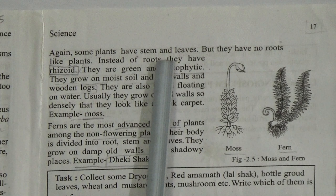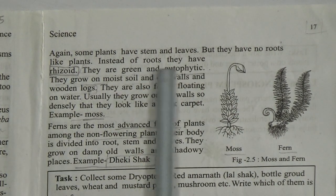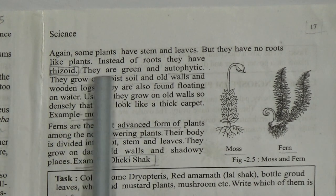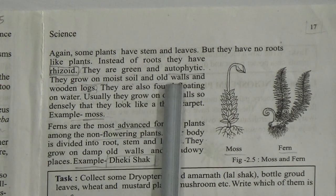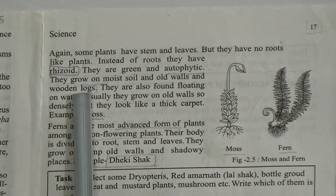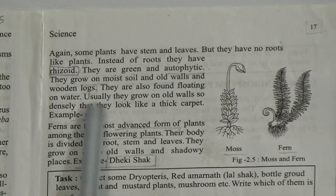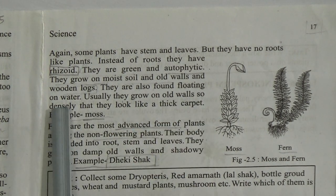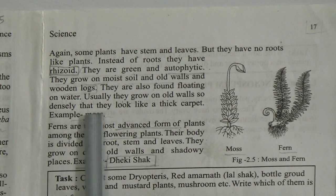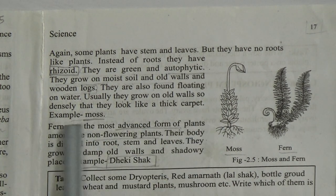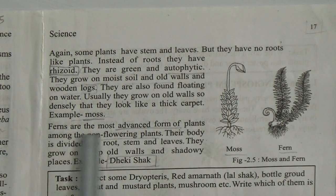This is page number 17. Some plants have stem and leaves but no roots. Instead of roots they have rhizoids. They are green and autotrophic, meaning they can make their own food. They grow on moist soil, old walls, and wooden logs, and are also found floating on water. Usually they grow so densely on old walls that they look like a thick carpet. Example: Moss. Here is the picture of moss.